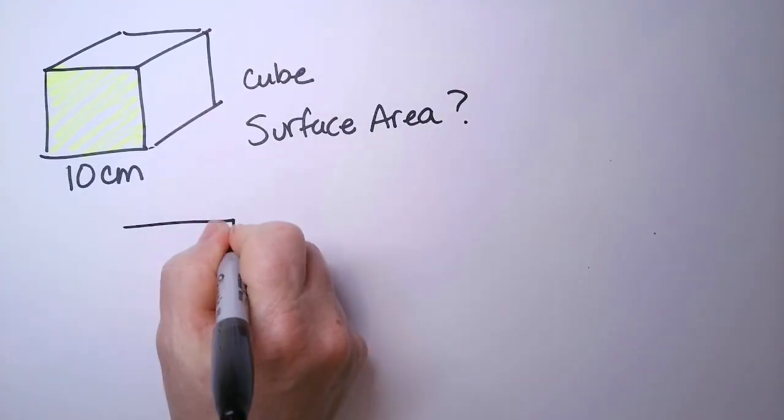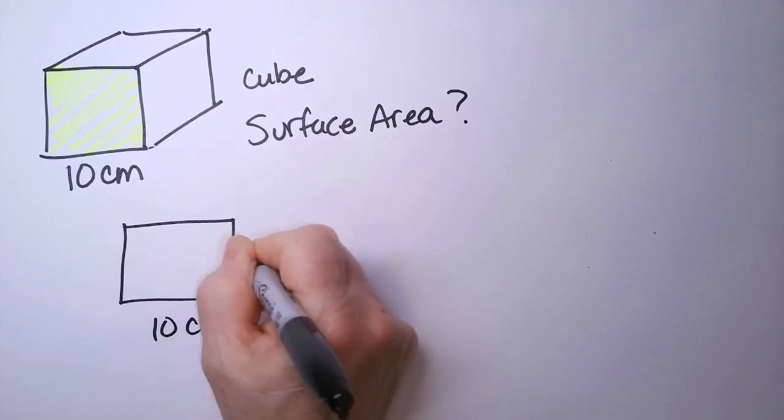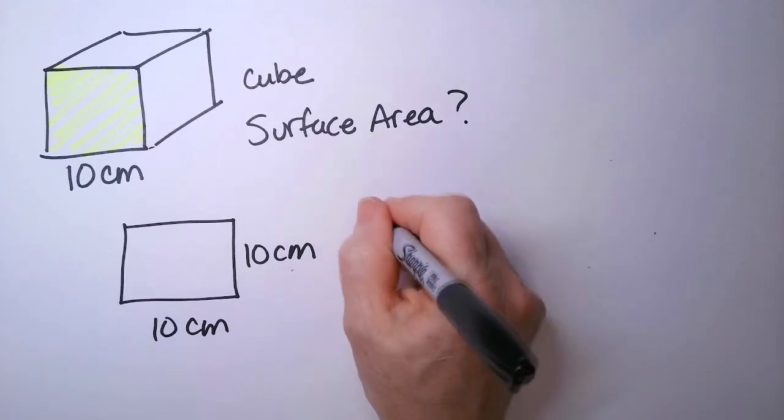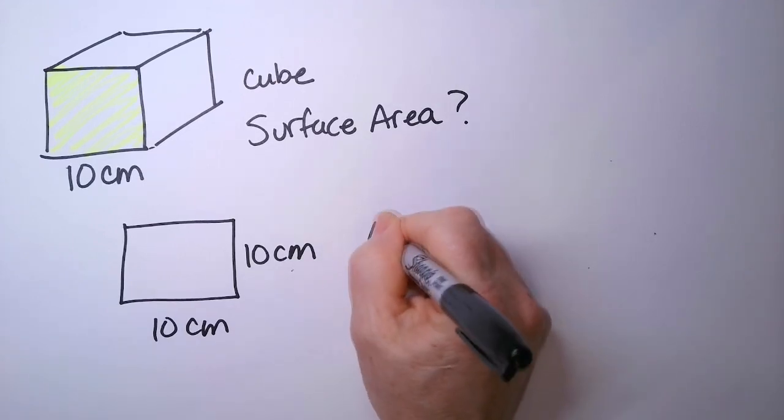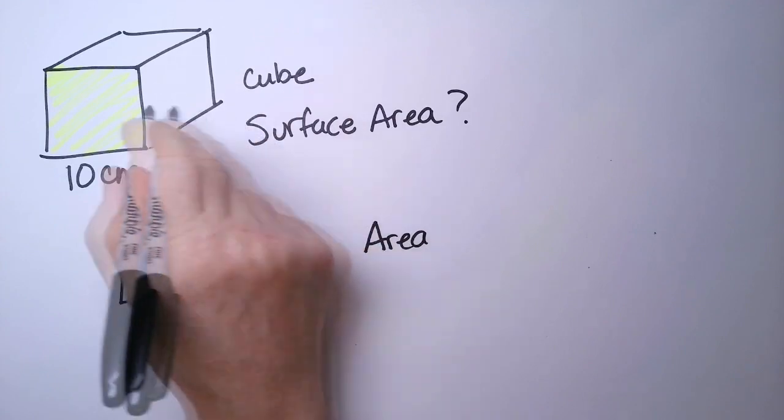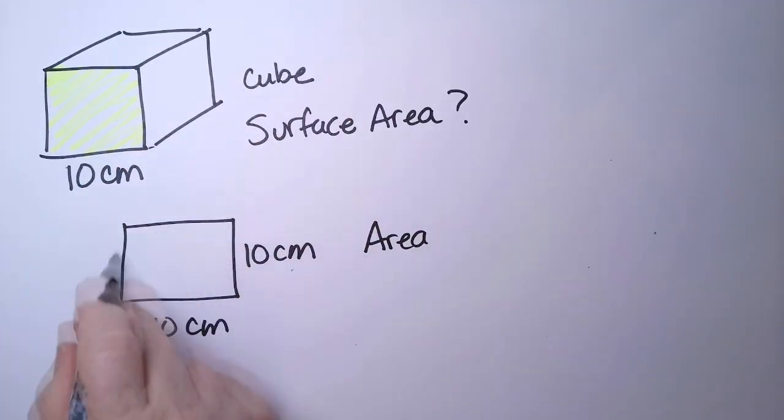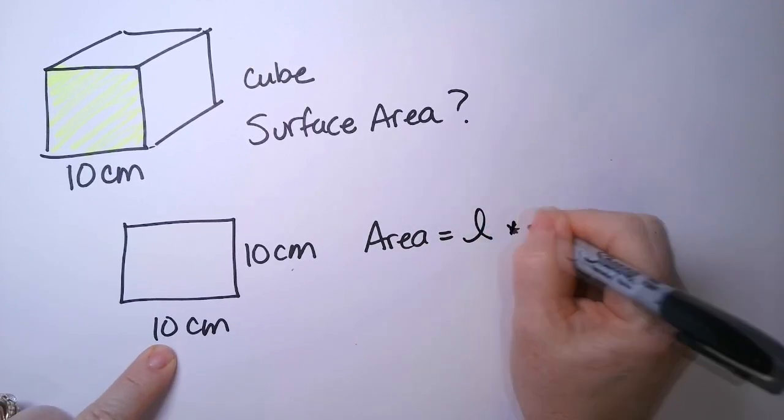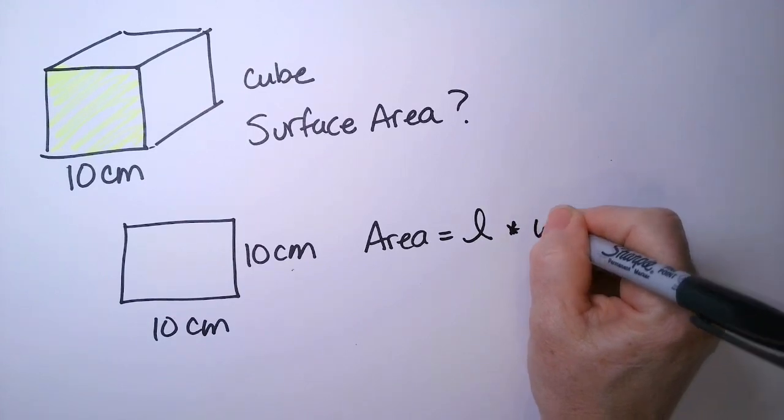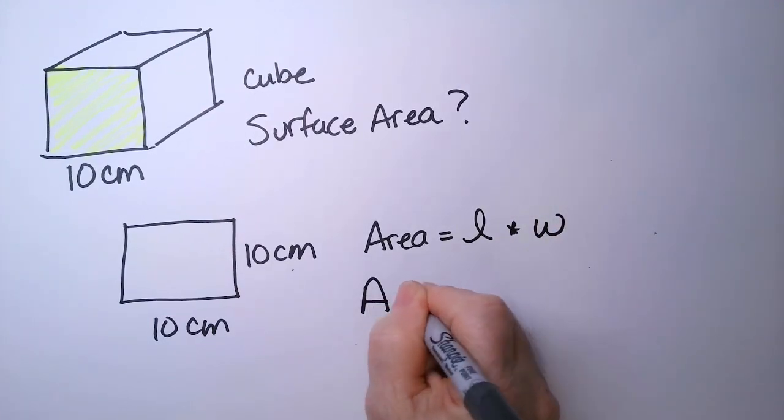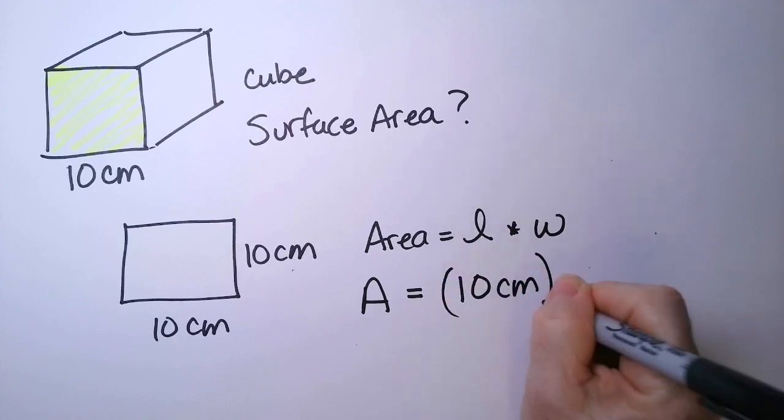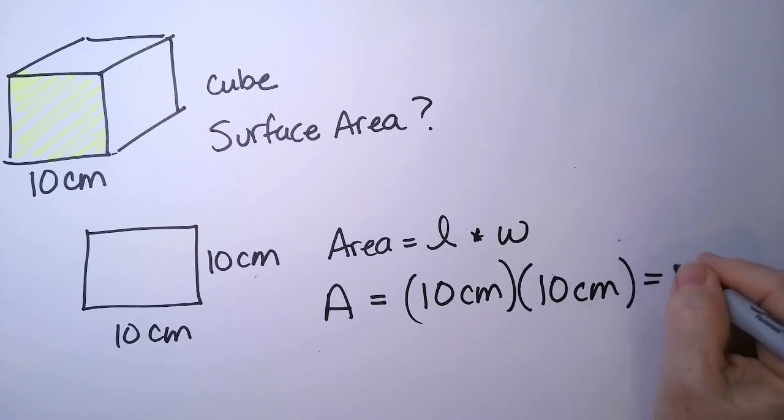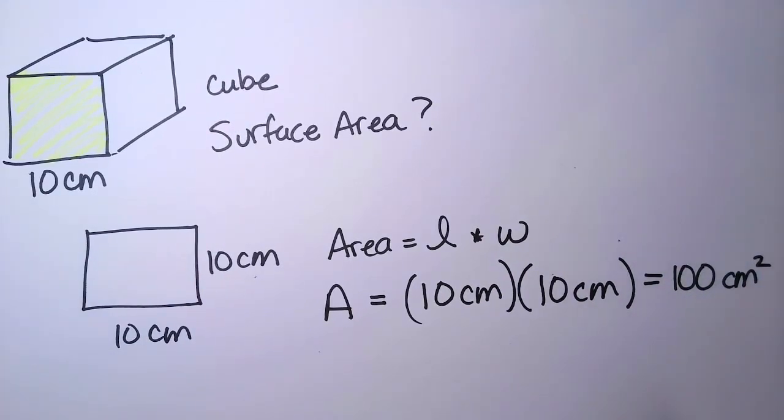So for one of the faces, you can draw it out. It's 10 centimeters by 10 centimeters, because a cube is a bunch of squares put together. So my area here, surface area is usually referred to a three-dimensional object. When it's just two dimensions like this, like just a square, we just call it area. This is going to be the length times the width, or the height, whichever one you're given.